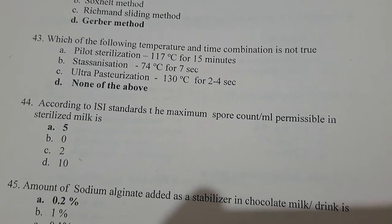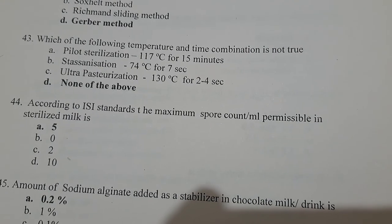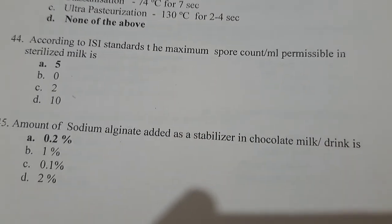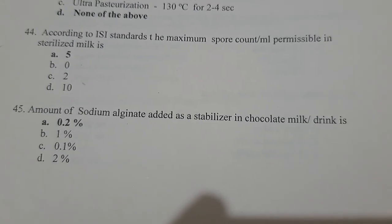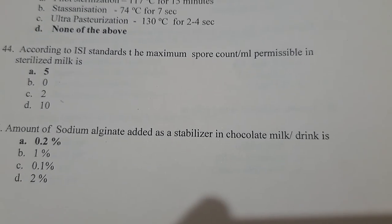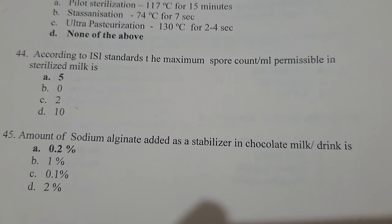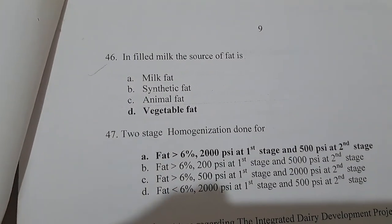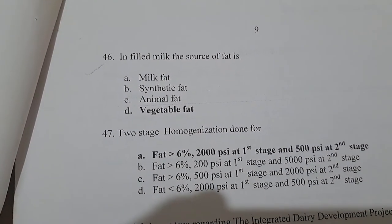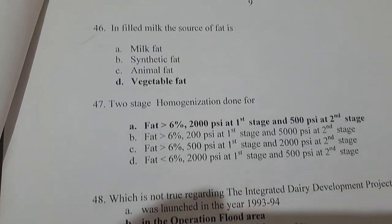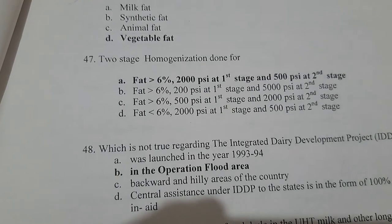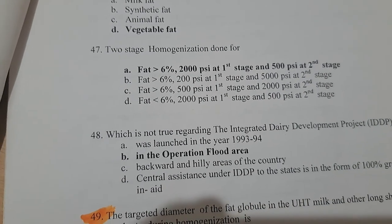According to ISI standards, the maximum aerobic colony count per ml permissible in sterilized milk is 5. Sodium alginate added as a stabilizer in chocolate milk drink is 0.5%.